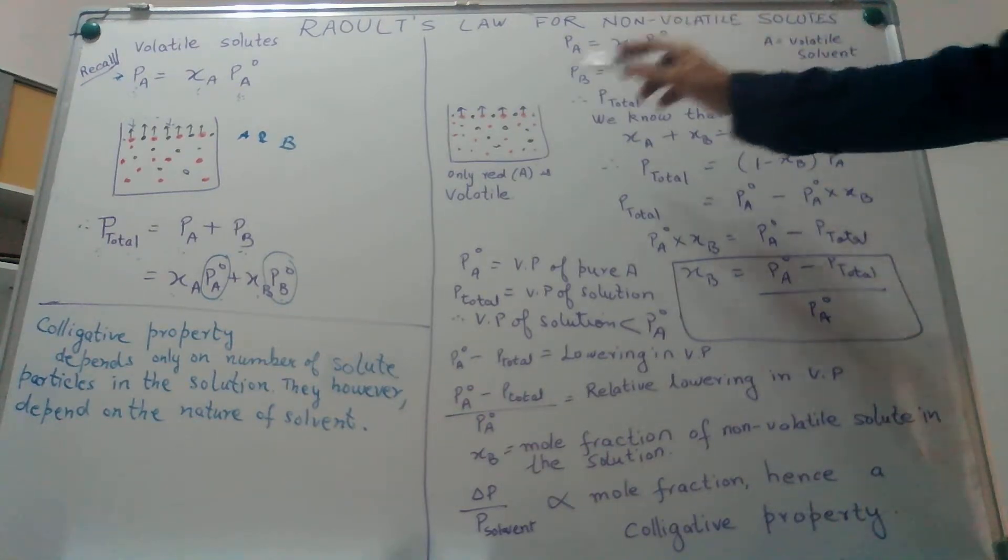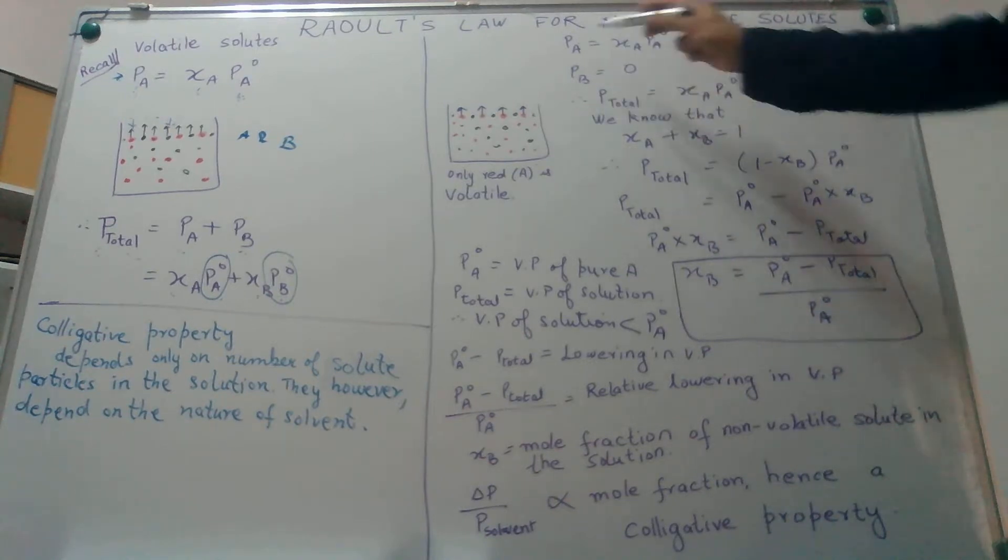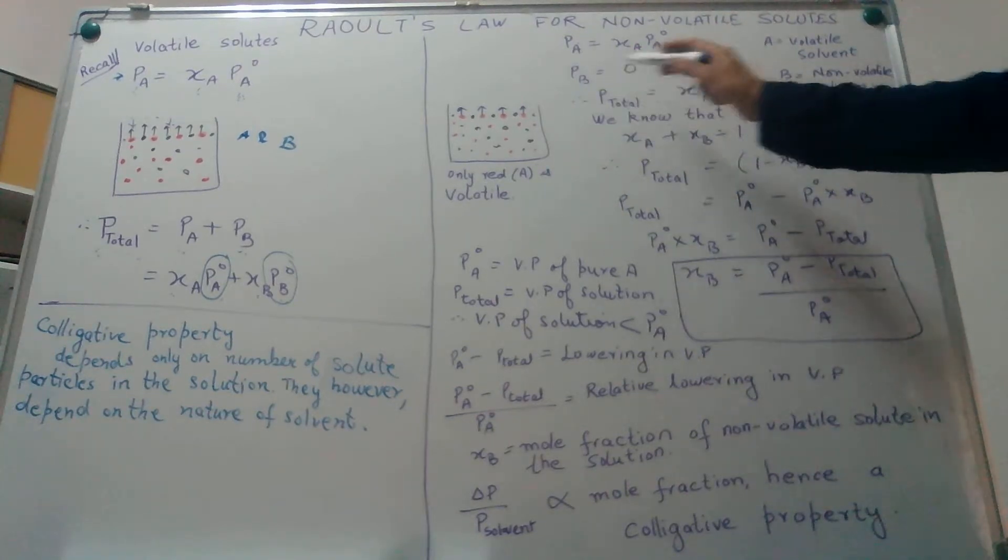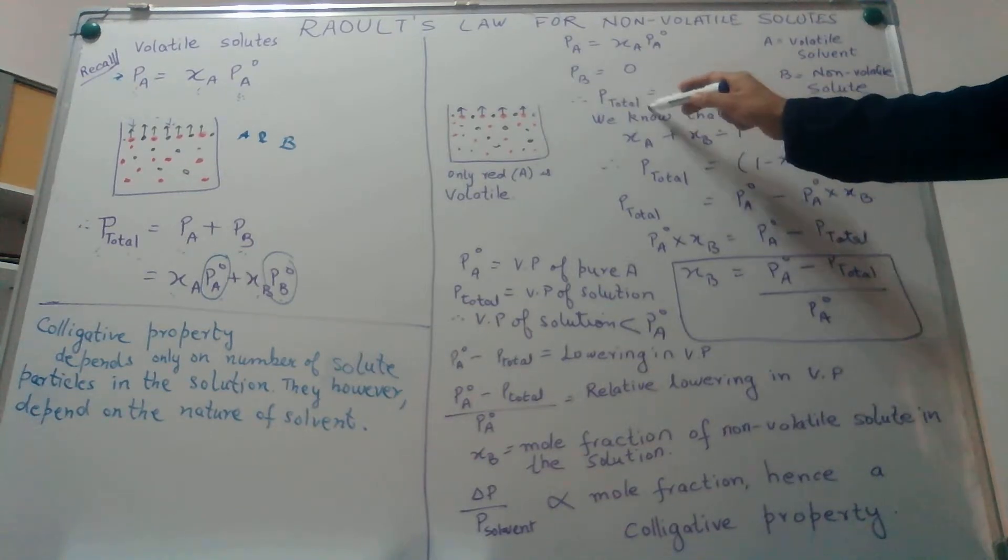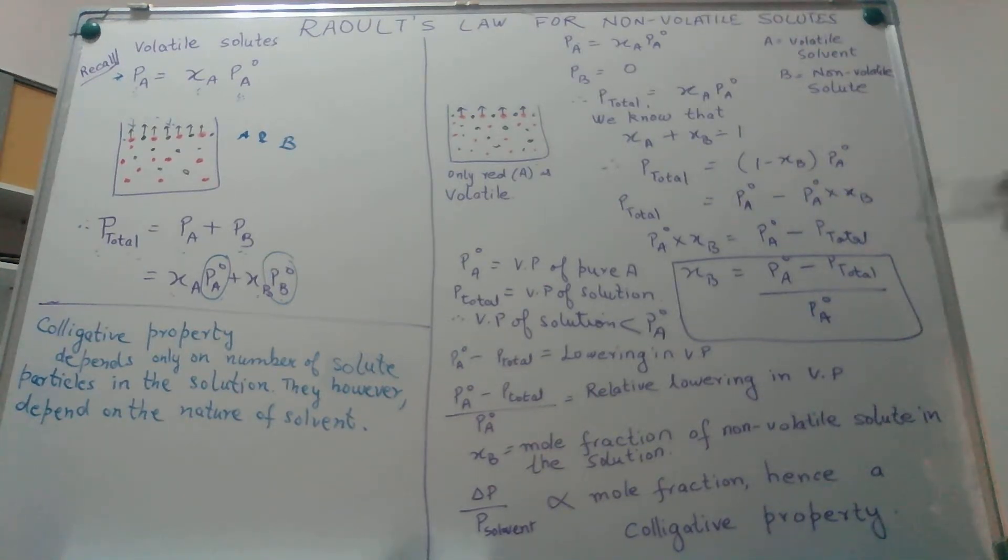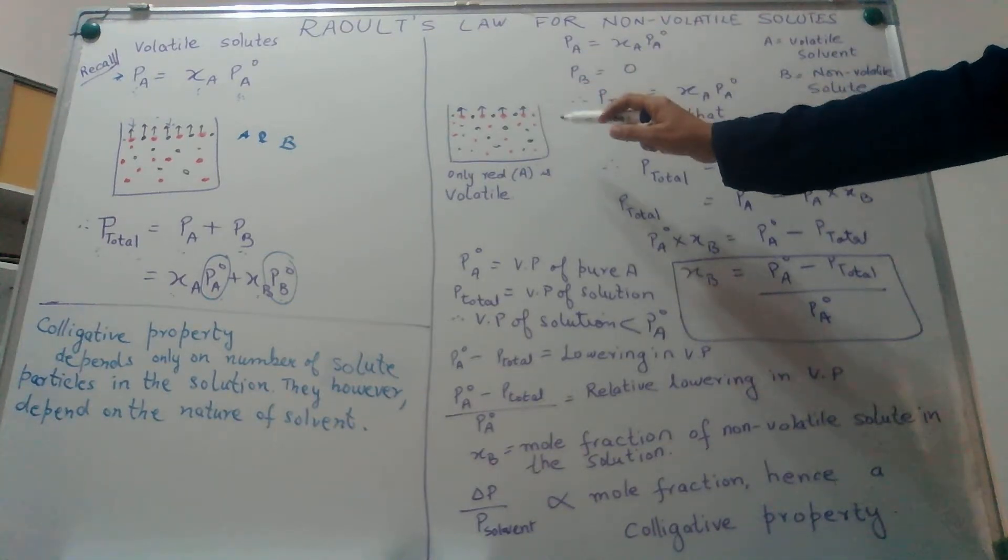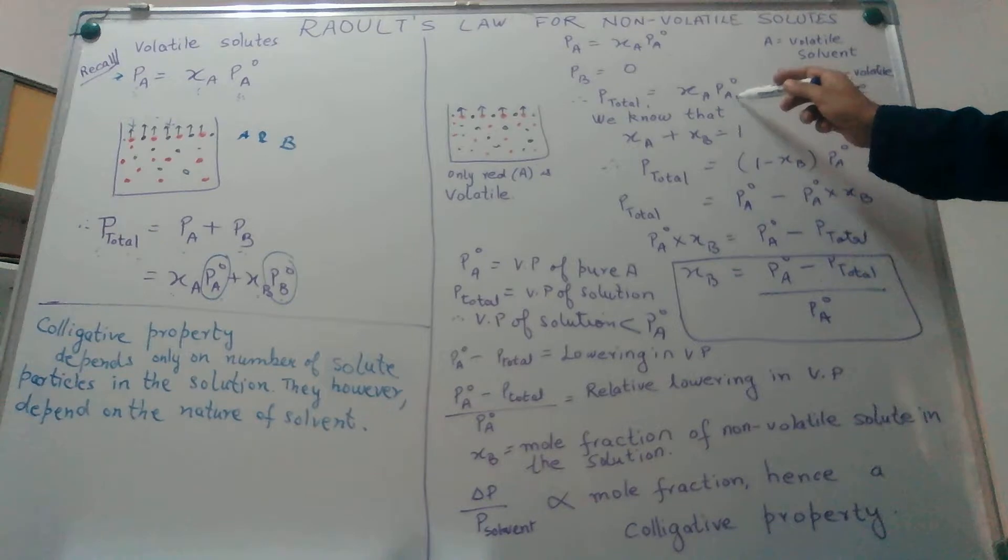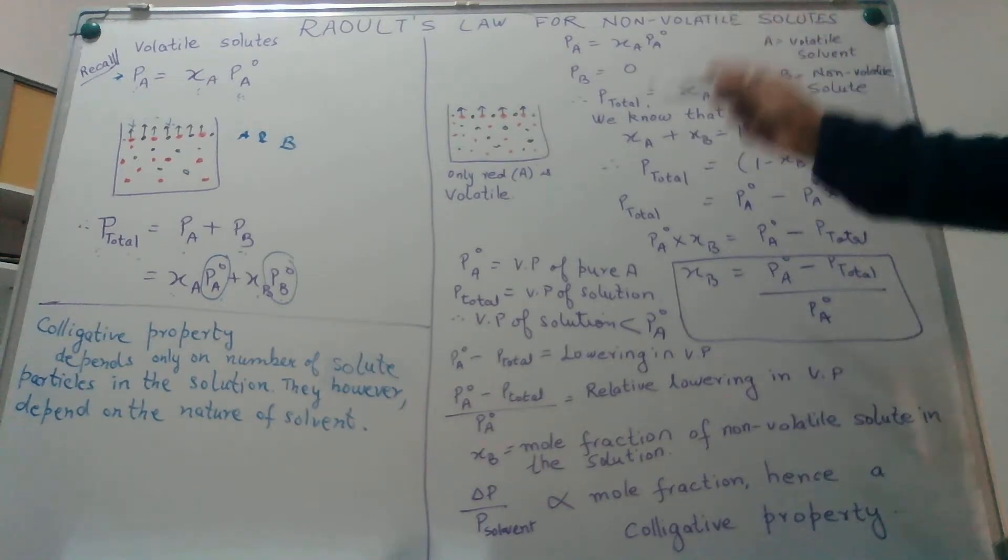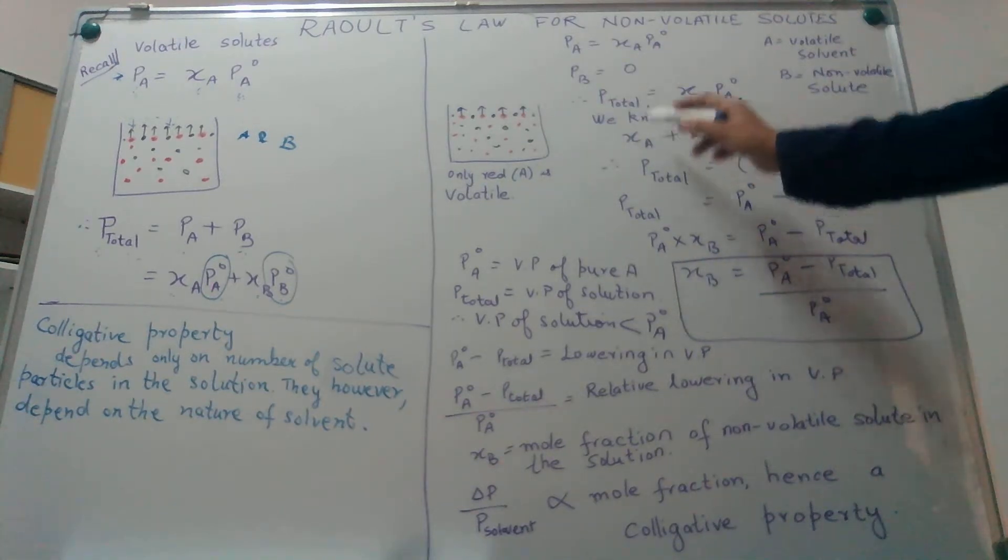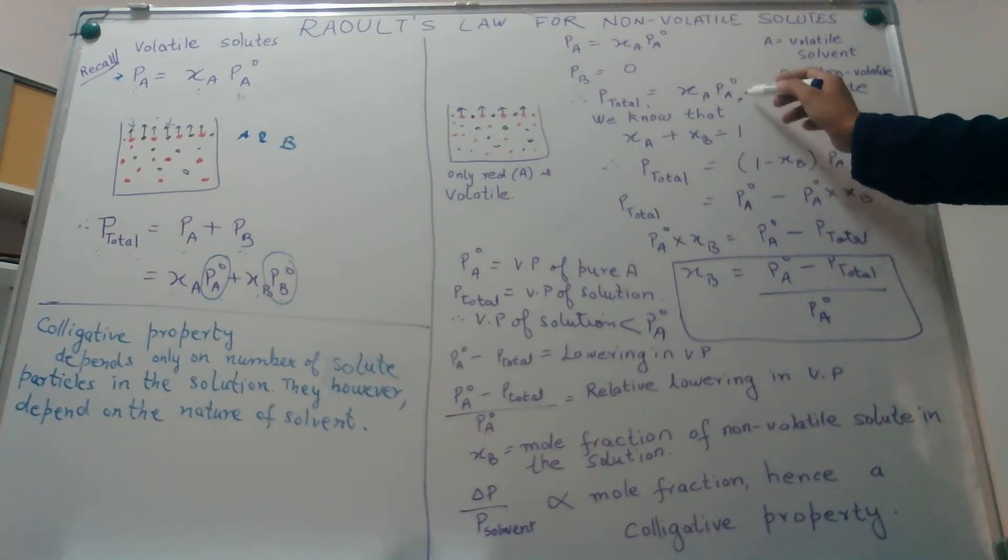So the pressure due to the black dots becomes null or zero. We have over here Pa is xA into Pa0, while Pb becomes zero. Hence, the total vapor pressure in such a liquid mixture would be only due to particles of A, but we also need to understand that on the surface we don't have only the particles of A, we do have B as well. So the total vapor pressure is happening only due to A, but it will be lower than that of pure A because A is only some fraction of these particles. So we have P total is xA into Pa0.